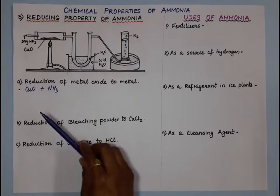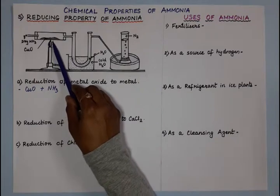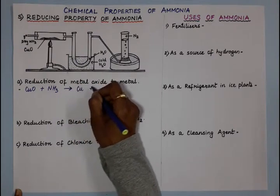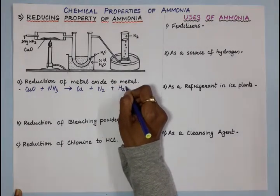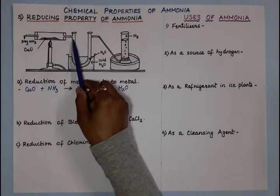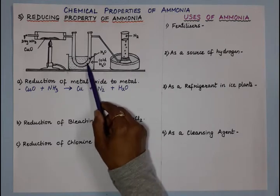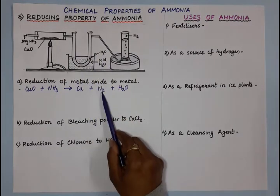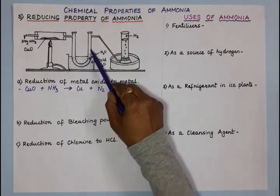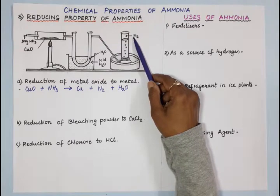With ammonia as the reducing agent, both are heated and the products formed are: cupric oxide is reduced to copper metal, along with nitrogen and water vapor. The black-colored cupric oxide turns to a dull red metallic residue of copper. Nitrogen and water vapor move to a U-tube immersed in cold water, where water vapor condenses to liquid water. Nitrogen, being insoluble in water, does not condense.